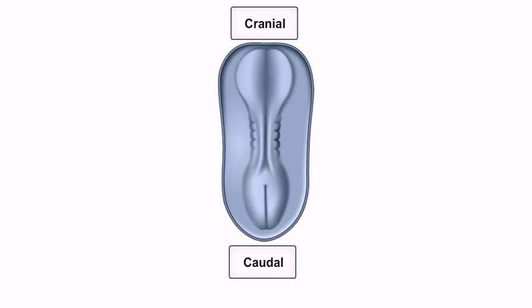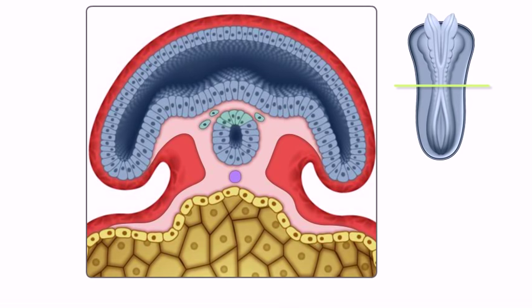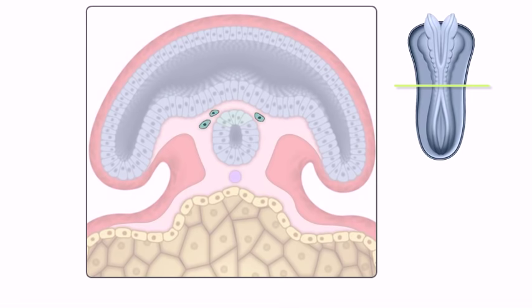During the closure of the neural tube, cells on the crest of the neural folds detach, forming a new cell population called the neural crest. These cells contribute to the formation of the peripheral nervous system.